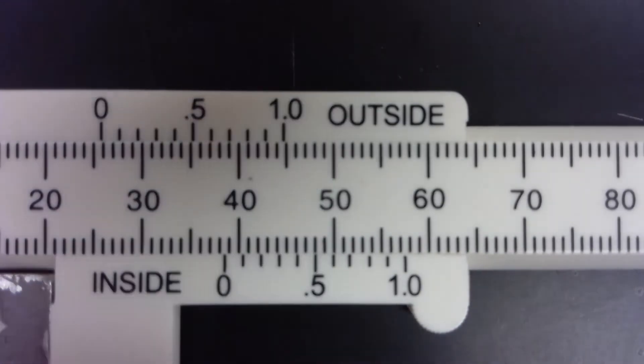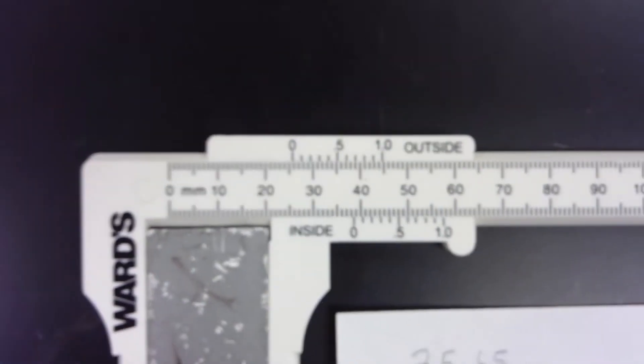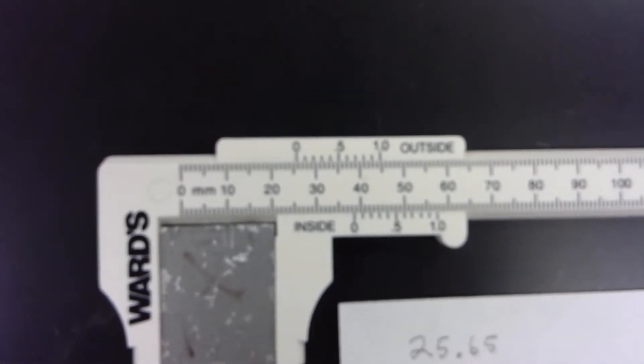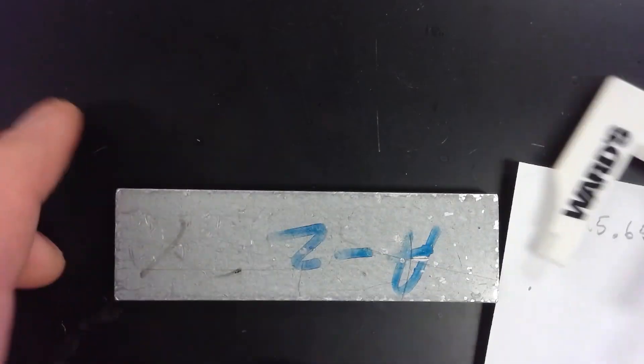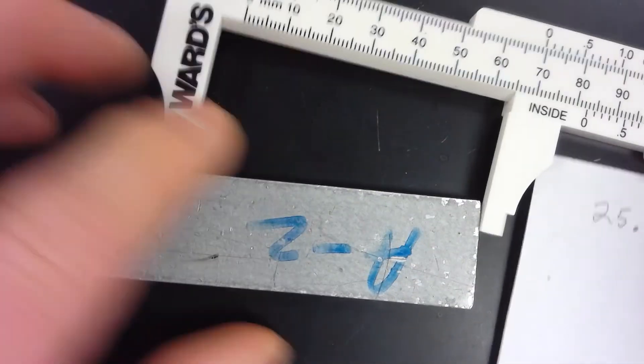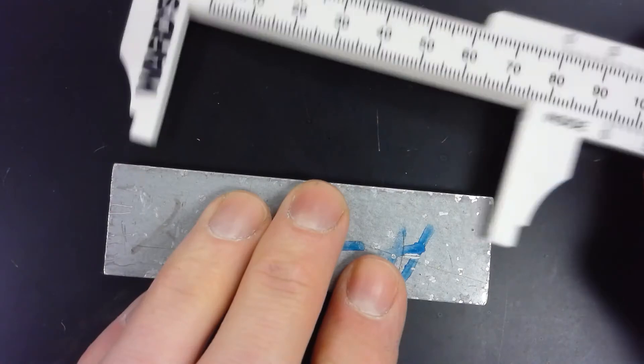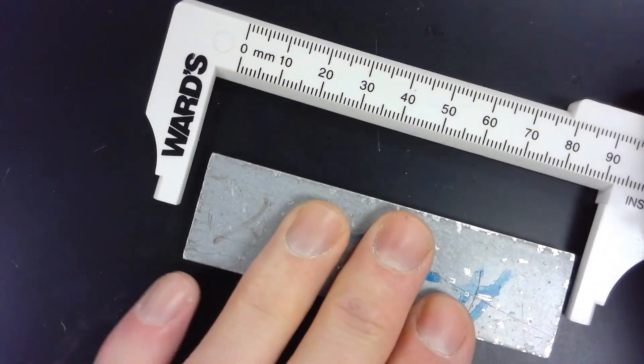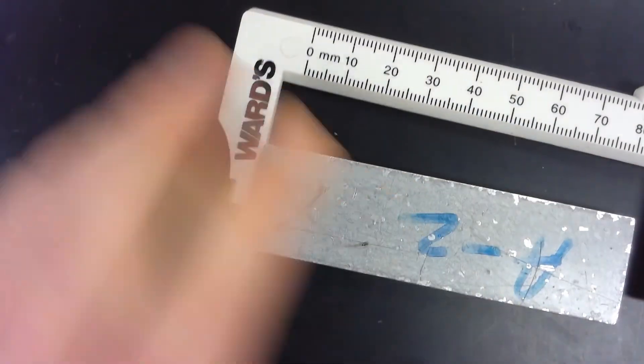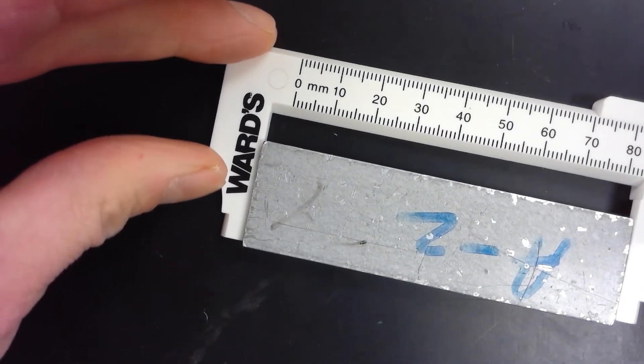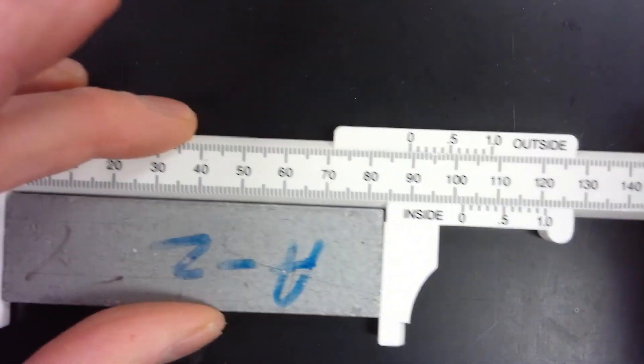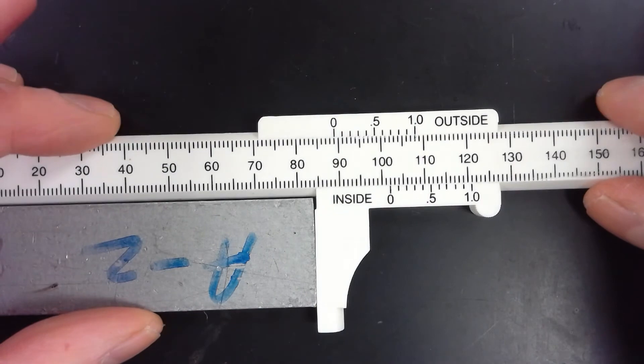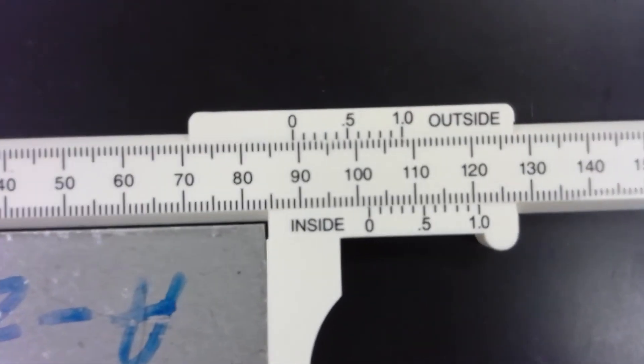Now what about another dimension? Let's look at the other dimension. So this longer one, we expand our caliper. Let me adjust. Clamp it down lightly. Make sure it's square. Look at our scale. Let's get a closer view.